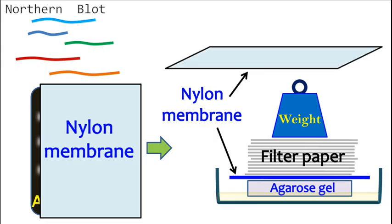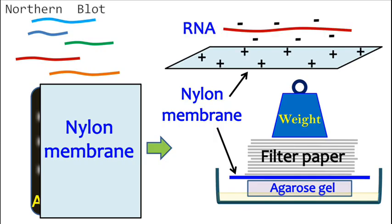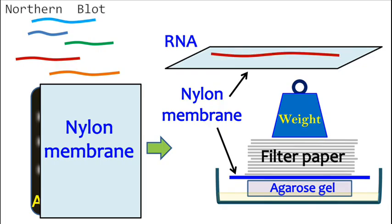The interaction between RNA and the membrane is favored by charge interaction. The nylon membrane has a positive charge while RNA has a negative charge. Because of this reason, RNA easily binds the membrane.